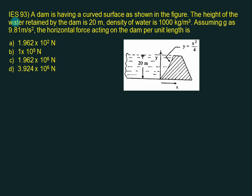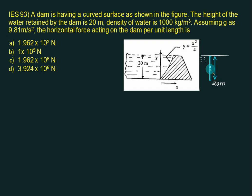We are given a dam with a curved surface described by y = x²/4, with the vertical distance equal to 20 meter and water density 1000 kg/m³. To calculate the horizontal force per unit width, we take the projected area viewed from the water side — this curved surface projects as a flat plate of height 20 meter. H-bar = 20/2 = 10 meter. FH = ρg × H-bar × A = 1000 × 9.81 × 10 × (20 × 1) = 1.962 × 10⁶ N.